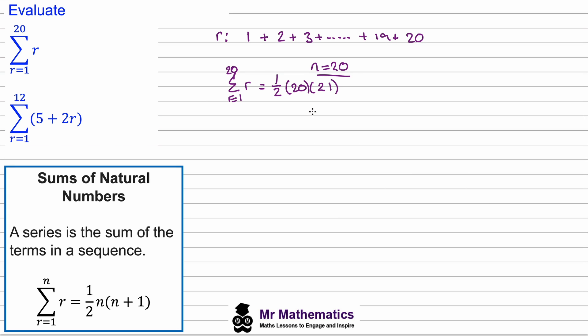Well, a half of 20 is 10, and 10 multiplied by 21 would give us 210.